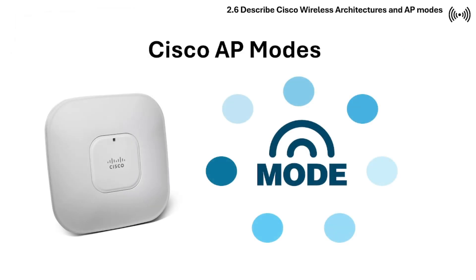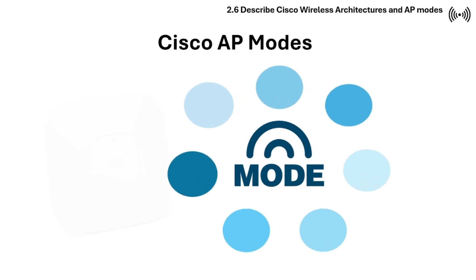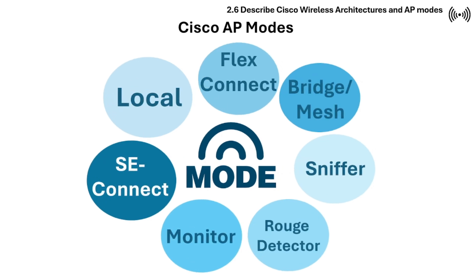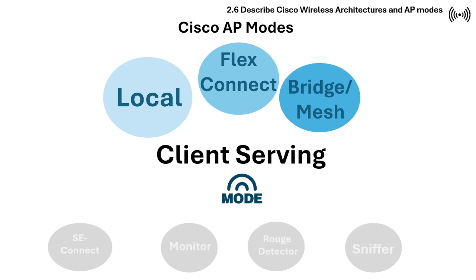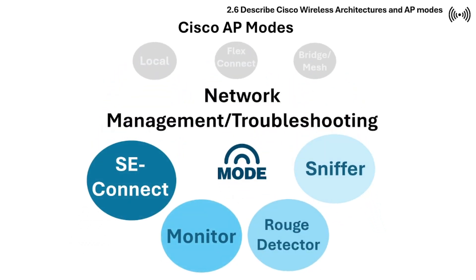Cisco wireless access points can operate in several modes, each configured for a specific purpose. The common modes include Local, FlexConnect, Monitor, Sniffer, Rogue Detector, Bridge or Mesh, and SE Connect. These are categorized into two groups: client-serving modes (Local, FlexConnect, and Bridge or Mesh) and network management and troubleshooting modes (Monitor, Sniffer, Rogue Detector, and SE Connect).